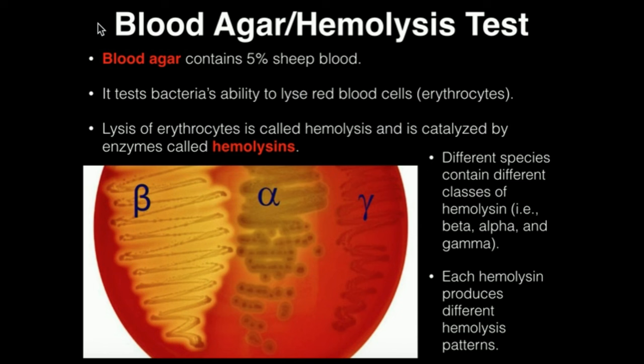Some organisms, such as those belonging to the genus Streptococcus, are what we call fastidious organisms, and that's because they have special nutrition requirements, and not every type of agar is going to be able to facilitate their growth. Organisms such as Streptococcus might need to be grown on enriched all-purpose media.